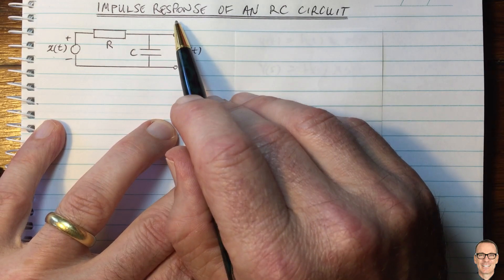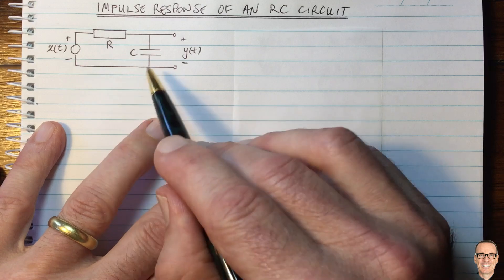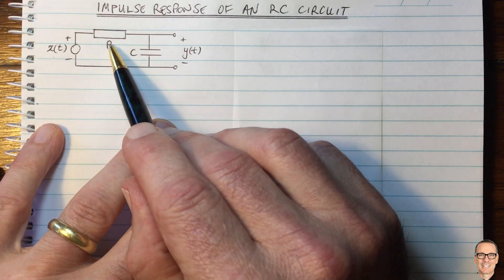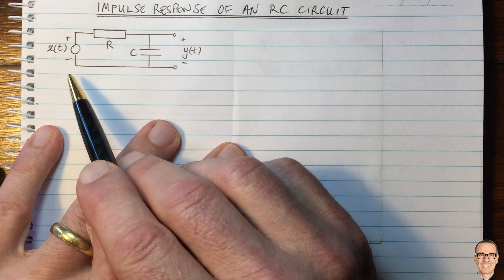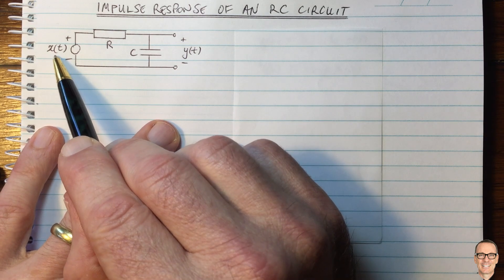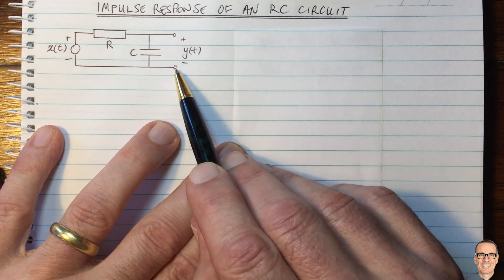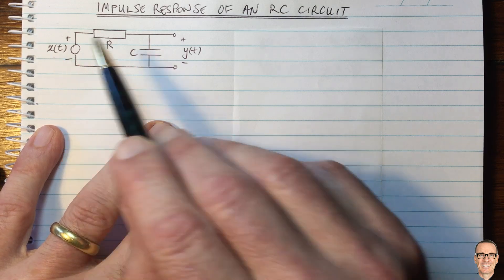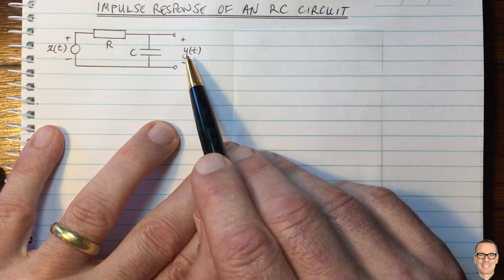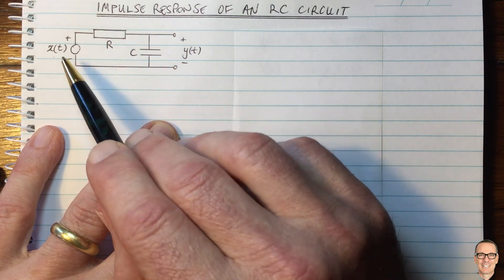What is the impulse response of an RC circuit? Here we have the most basic RC circuit with a resistor and a capacitor. You might use this circuit in an audio application where X(t) might be the signal from a microphone, and you might connect an amplifier across these terminals to amplify the signal into a speaker. So we have an input signal and an output signal, and we want to understand what the effect of this circuit is on the signal.